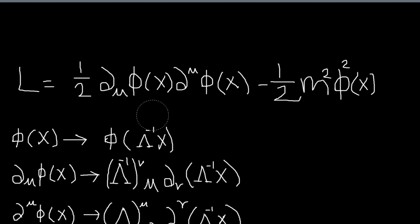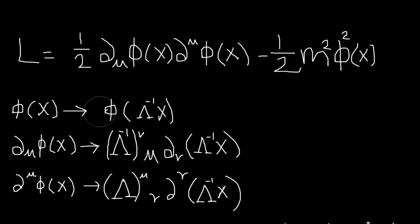So when we do a Lorentz transformation, phi is just a scalar field, so it will transform like this, and then these d mu things will transform like these respectively.